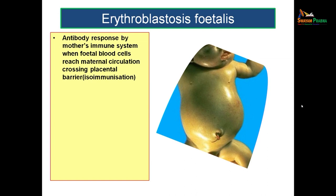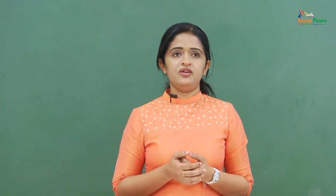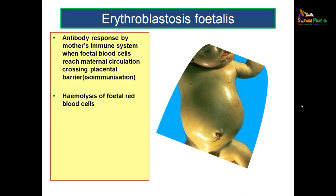Usually the fetal blood vessels would not reach the maternal blood, but at times they might mix with maternal blood by crossing the placental barrier, due to some defects in the placental barrier. As a result, the mother's blood starts producing antibodies, resulting in destruction of the fetal red blood cells — hemolysis — and increased production of erythroblasts in the fetus.